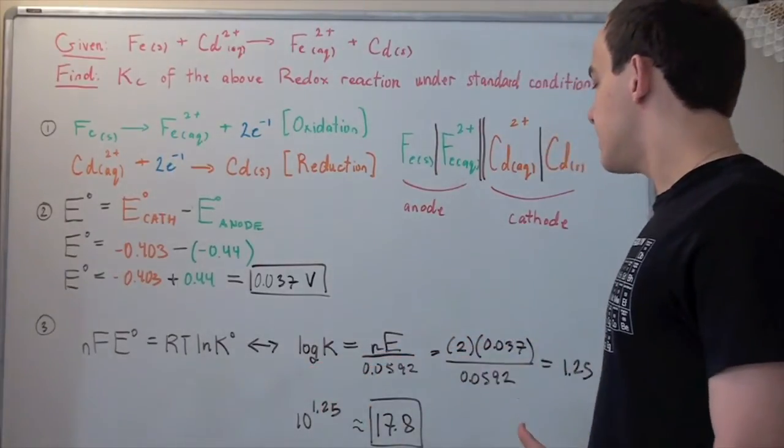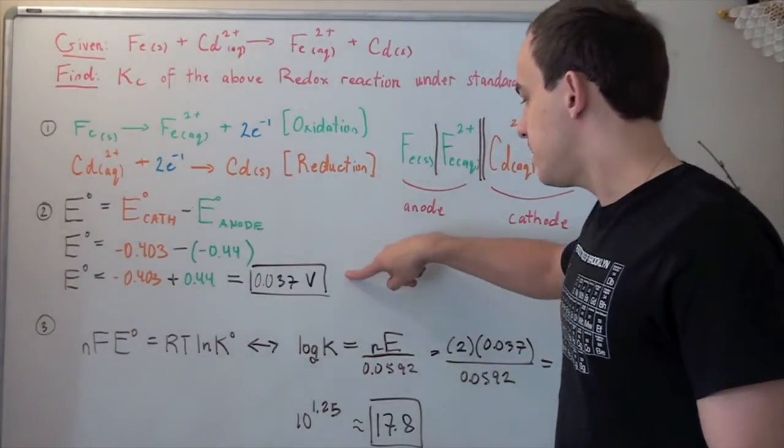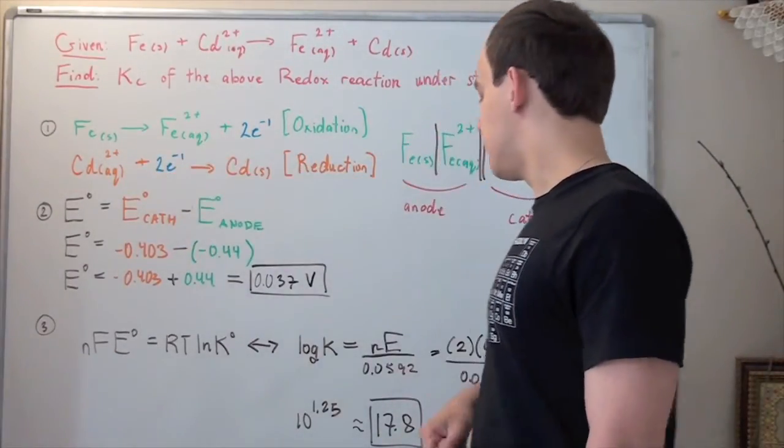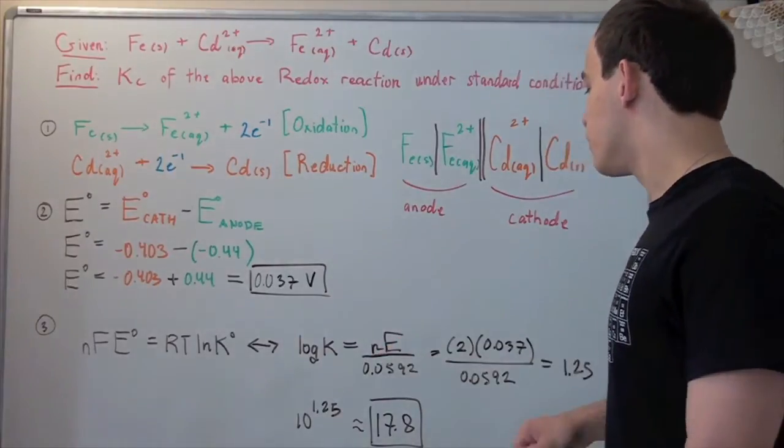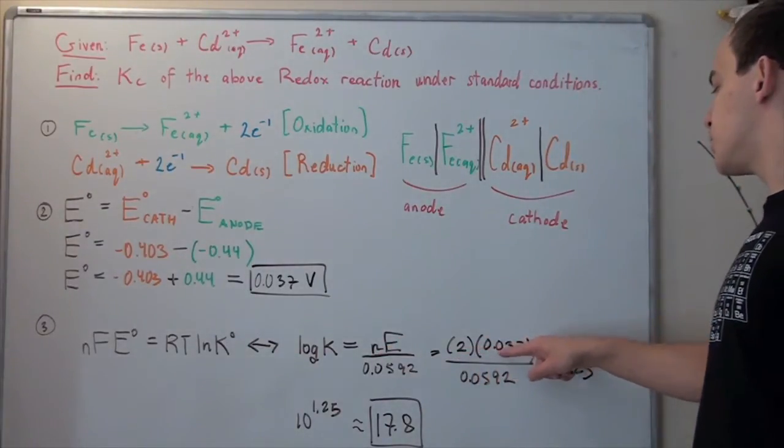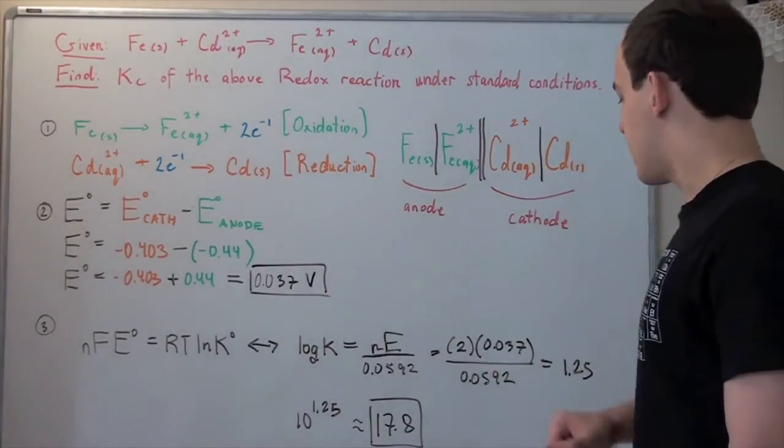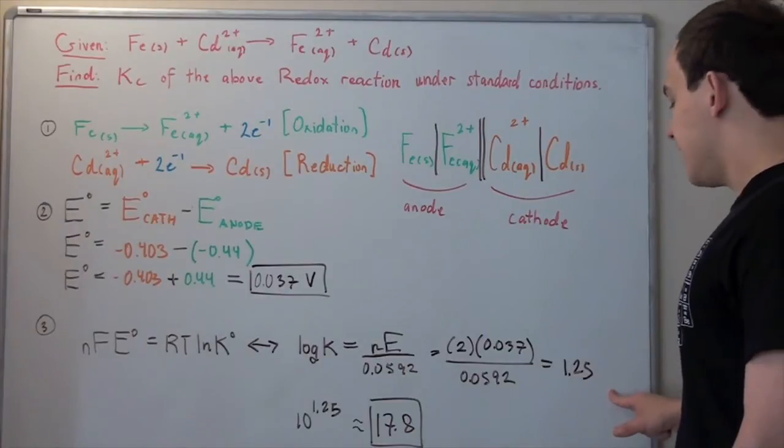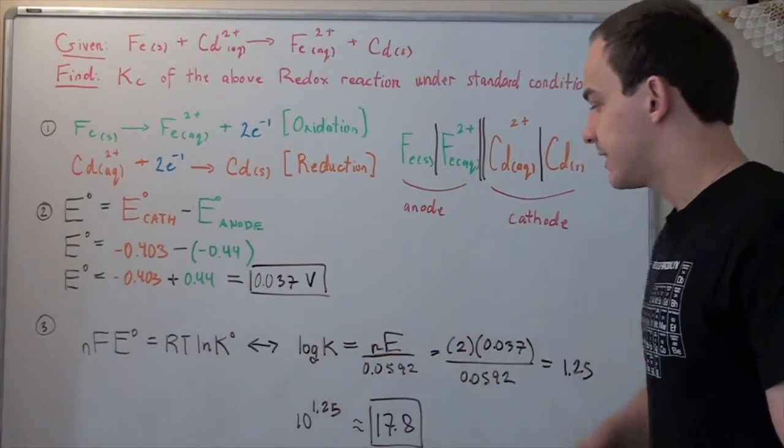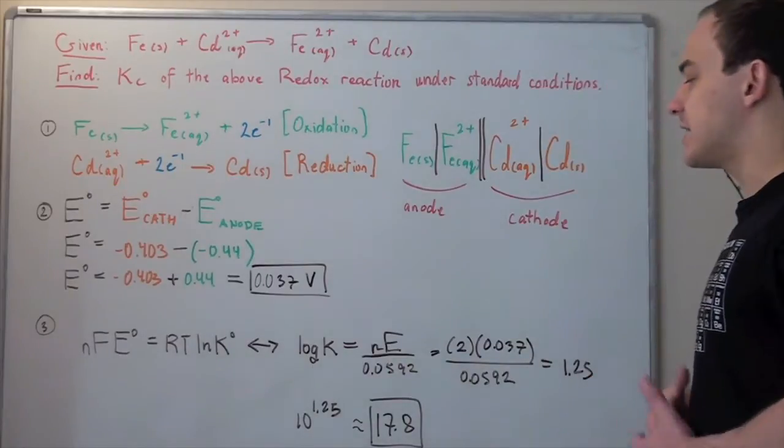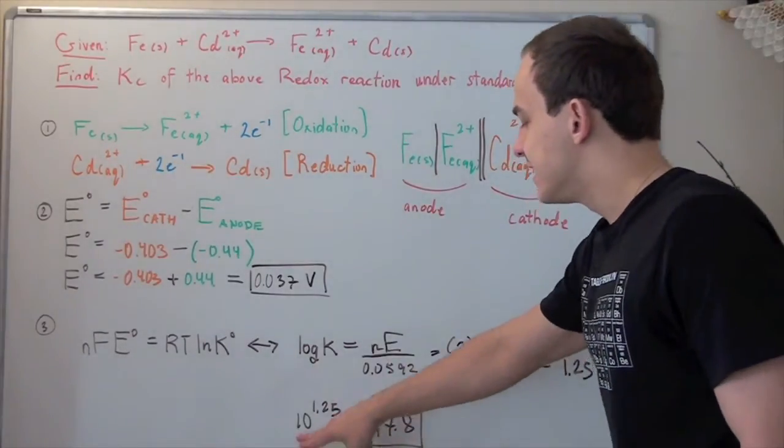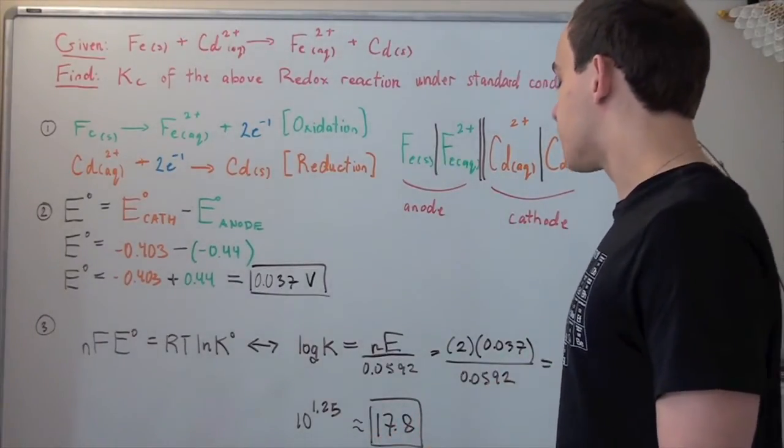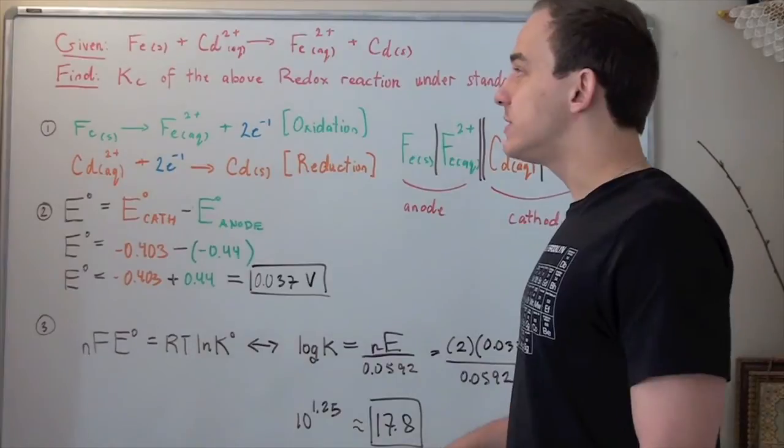Let's plug in our values. E is 0.037 and n is two moles of electrons. Two times 0.037 divided by 0.0592 equals 1.25, which equals log K. Converting to exponential form: 10 to the 1.25 equals approximately 17.8. So K is 17.8.